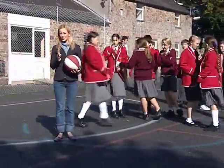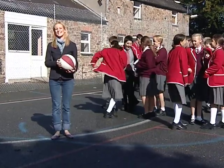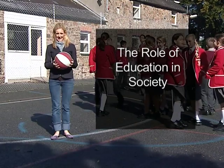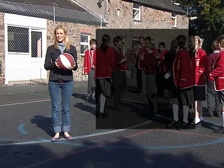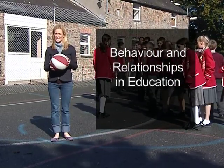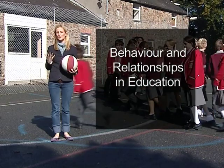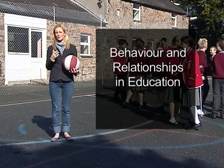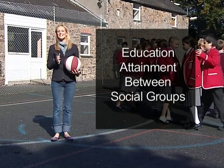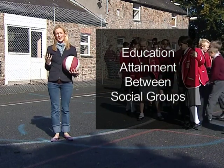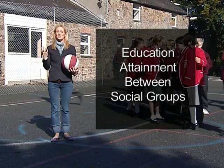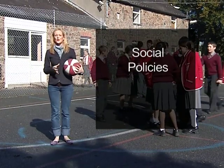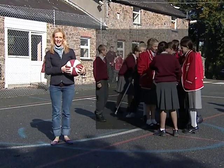The four main areas that sociologists are concerned with are these. Firstly, the role of education in society. Secondly, behaviour and relationships in education, such as teacher-pupil relations — also in this category comes the hidden curriculum and subcultures. Thirdly, the difference in attainment based on gender, social class and ethnicity. And finally, social policies and how they affect education.